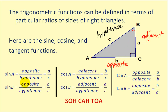One way to remember all of these is to use the acronym SOHCAHTOA, which stands for: sine is opposite over hypotenuse, cosine is adjacent over hypotenuse, and tangent is opposite over adjacent.